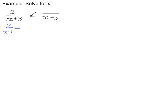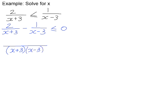Our first job is to subtract 1 over (x minus 3) from both sides, and that will leave us with zero on the right-hand side. We now need to get this to be a single fraction with a single numerator divided by a single denominator, so that we can decide what our critical values are. Our LCD, or lowest common multiple, will be the multiple of the two factors in the denominators. We need to multiply the first fraction by (x minus 3) over (x minus 3), and the second fraction by (x plus 3) over (x plus 3).